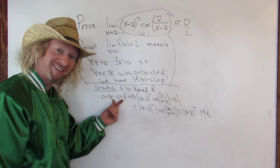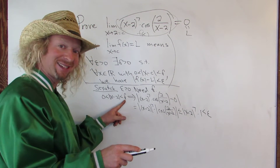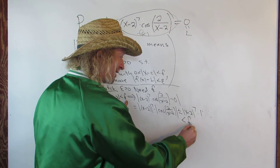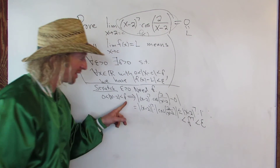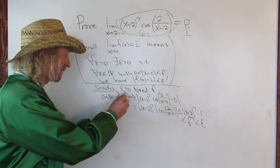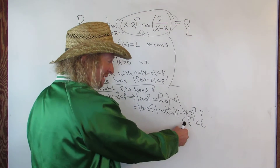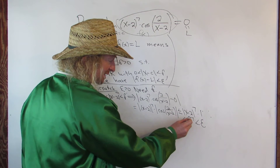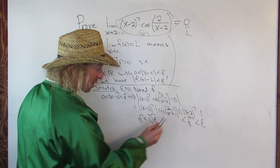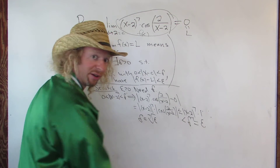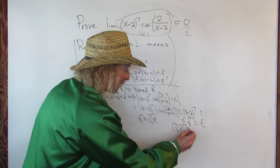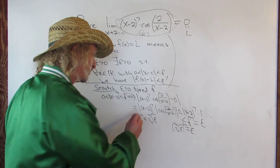Now we think: the absolute value of x minus 2 is less than delta, so the absolute value of x minus 2 to the 7th is less than delta to the 7th. And we want delta to the 7th to be less than epsilon. So if we take the 7th root of epsilon and set delta equal to the 7th root of epsilon, things will work. When you raise delta to the 7th power, you get the 7th root of epsilon to the 7th power — which is just epsilon. So this will be our delta in the proof.